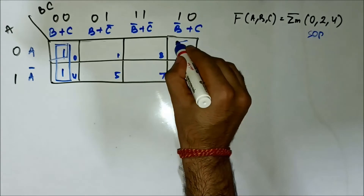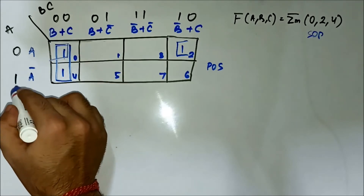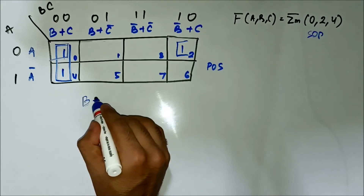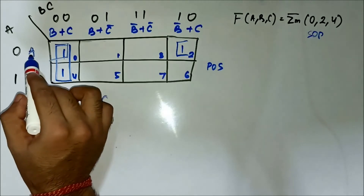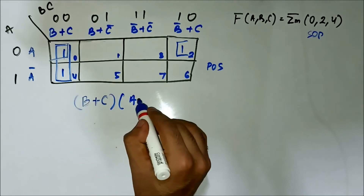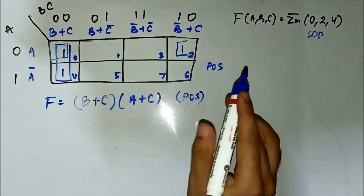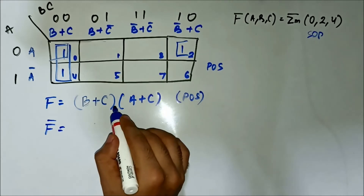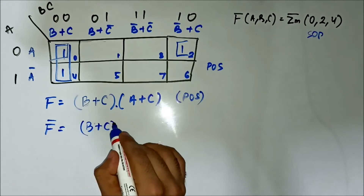For the first pair, nothing is common on the horizontal side; on the vertical side we have B or C. For the second pair, A is common on the horizontal side and C is common on the vertical side, so it would be A or C. But this is the POS expression and we need SOP, so we will complement the whole expression applying De Morgan's theorem.